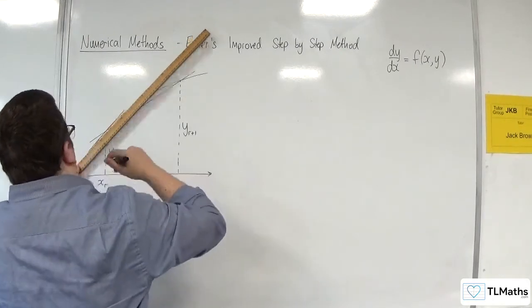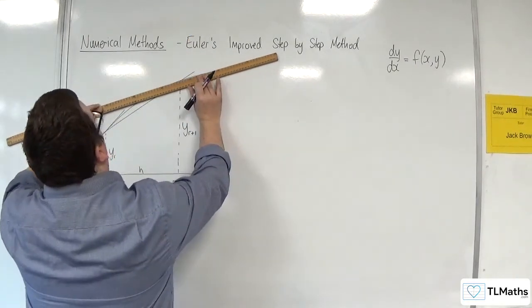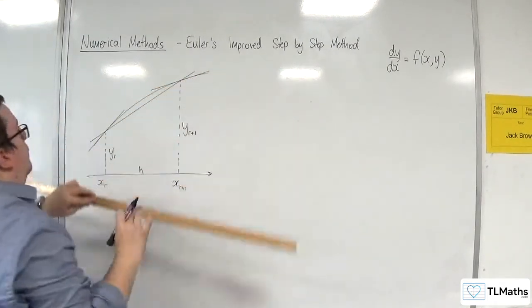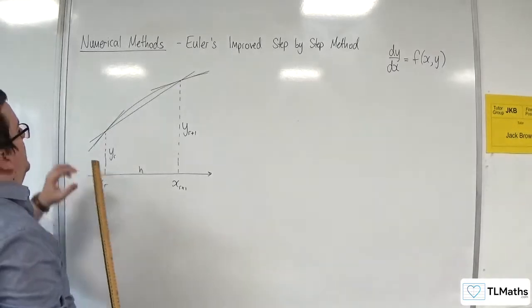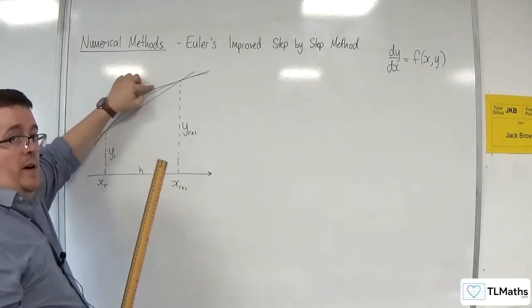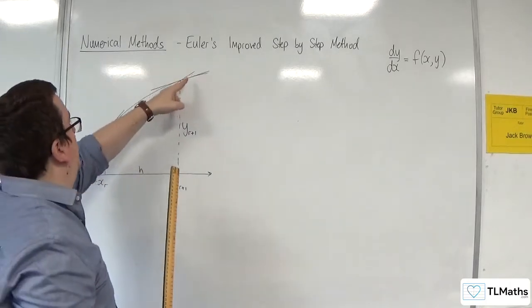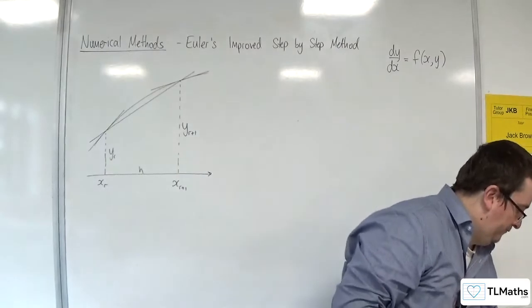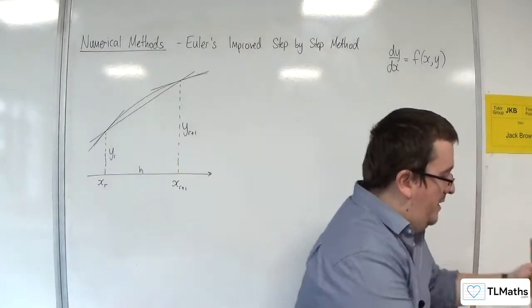So, the average of that one with that one. So, if I worked out that gradient and that gradient, added them together and divided by 2, I would get an estimate for this gradient between my two points. So, that's the idea.